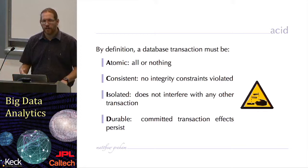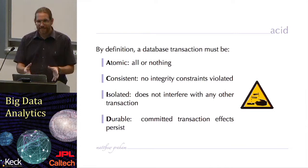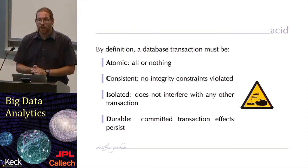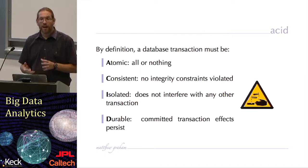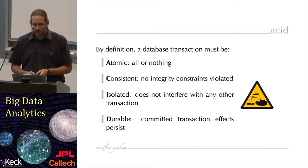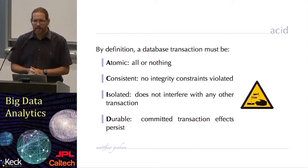By definition, a database transaction is what's called ACID, which is an acronym. It's atomic, so either the transaction completes or nothing happens — you don't get half the transaction occurring. The database transaction is consistent: there are no integrity constraints violated. This means that constraints on the type or format of data in columns, or connections between different data tables and relations, are not violated or compromised by the database transaction. A transaction is isolated in the sense that it has no impact on any other transaction that's going on.